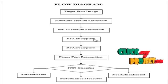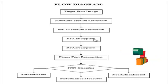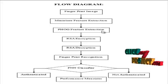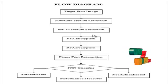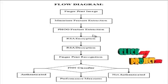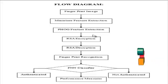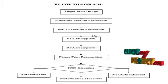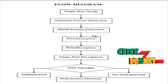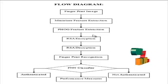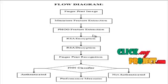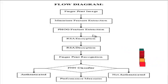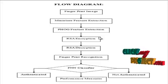The RSA encryption algorithm encrypts the features in order to keep them safe in the fingerprint dataset. RSA is a public key process. A separate key is used for the encryption and decryption process in RSA encryption.